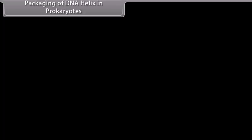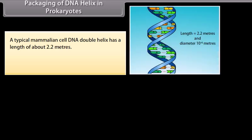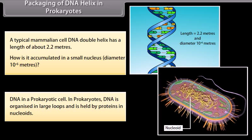Packaging of DNA helix in prokaryotes. A typical mammalian cell DNA double helix has a length of about 2.2 meters. How is it accumulated in a small nucleus? In prokaryotes, DNA is organized in large loops and is held by proteins in nucleoids.